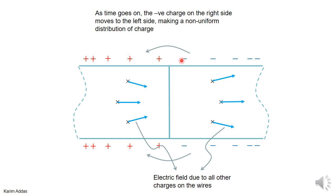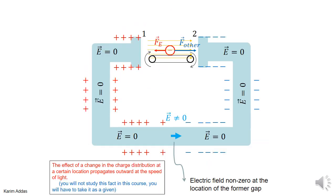Of course, the negative surface charges will start to move and become less non-uniform, but that's not critical right now. What we've shown is that when the gap is filled, an electric field is established in the region near the gap due to the change in charge distribution — there was charge in the gap, and now there isn't.